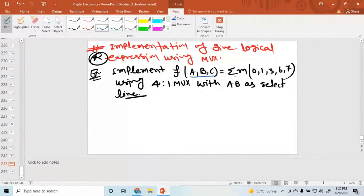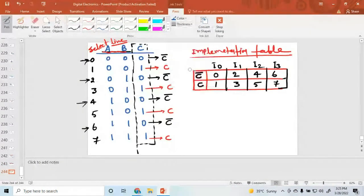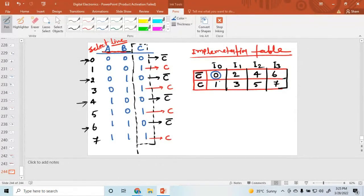And the question is, where is the minterm? So minterm is at level 0, 1, 3, 6, and 7. So just round up these sections. Round up these sections: 0, 1, 3, 6, and 7. So this is the minterm. 0, 1, 3, 6, 7 is the minterm.